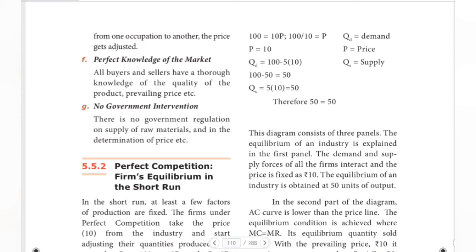Next, perfect knowledge. Both sellers and buyers have perfect knowledge about price, quality, and availability. For example, if tomatoes are selling at 75 rupees in one shop and 60 rupees in another, buyers with perfect knowledge will go to the cheaper shop.